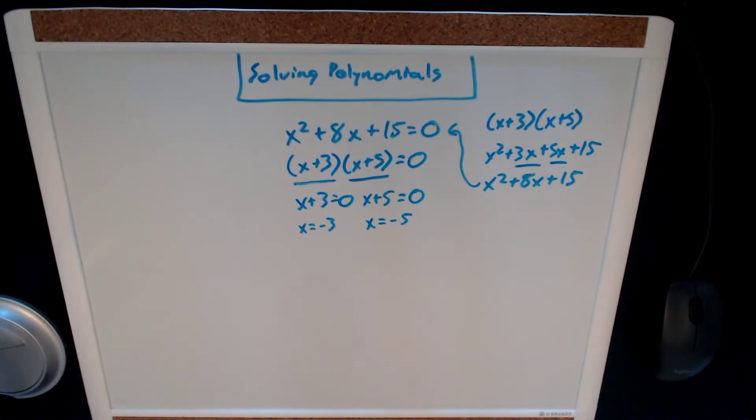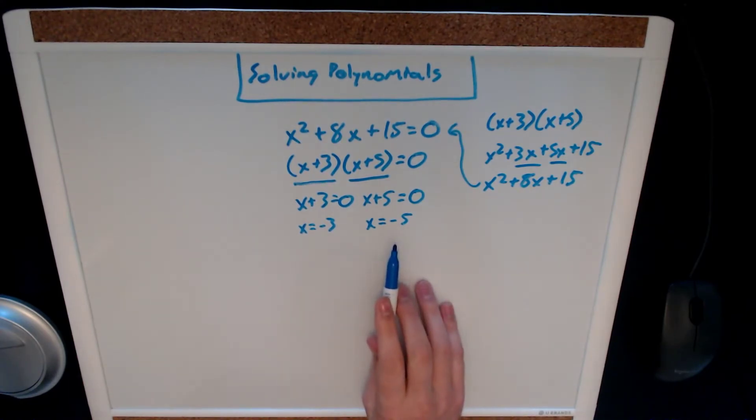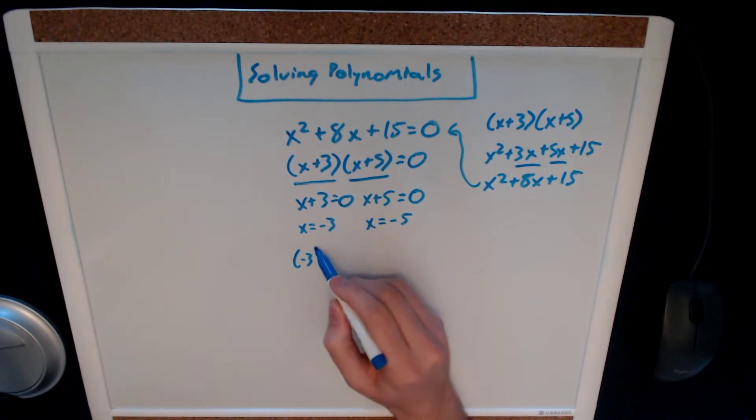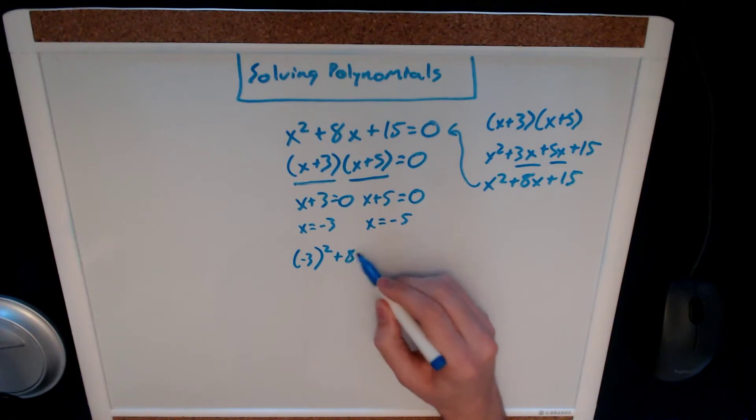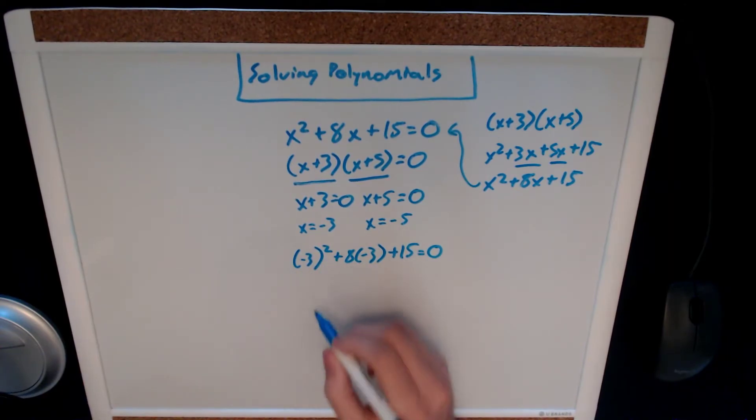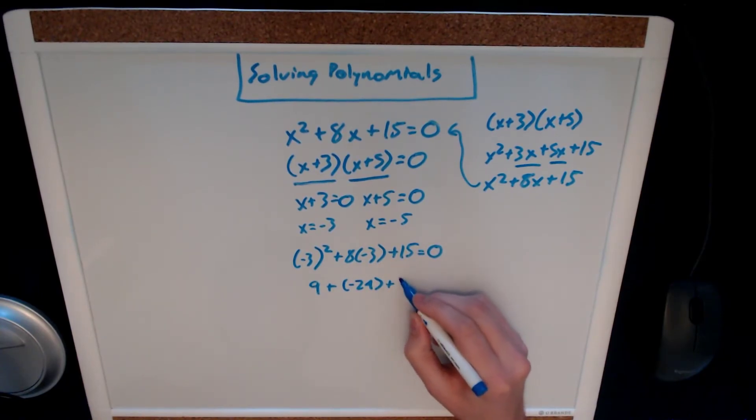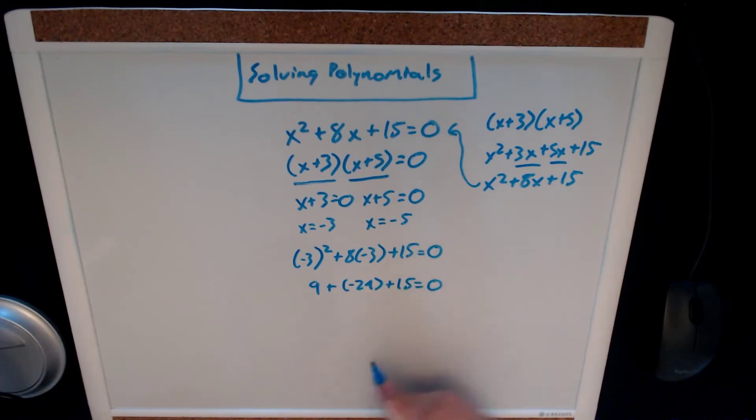Now we can prove that these two numbers are our solutions by plugging them back into our original equation and solving. So if we have x squared, we have negative 3. Let's go with negative 3 first. Squared plus 8 times negative 3 plus 15 equals zero. That's going to be negative 3 squared which is 9, plus 8 times negative 3 is negative 24. So we're actually subtracting our 24 here and bring down our 15. So if we take our positive terms 9 and 15 and add them together we get 24. So isn't 24 minus 24 zero? This one checks out.